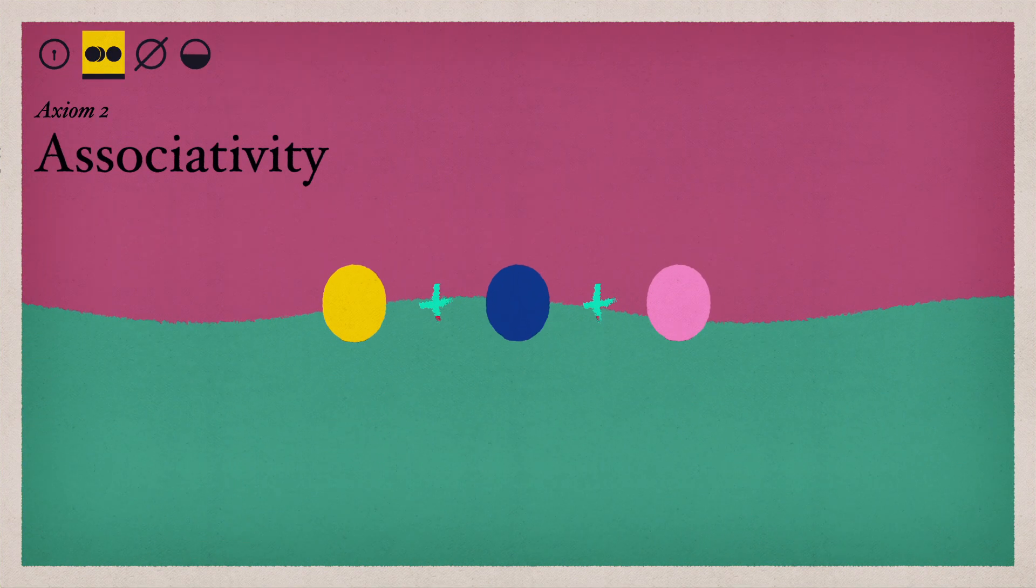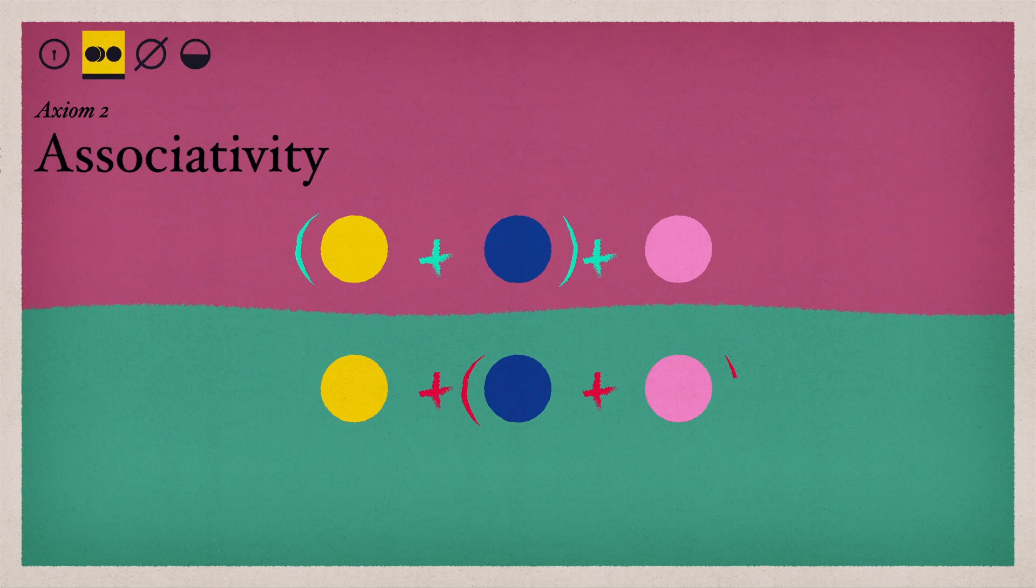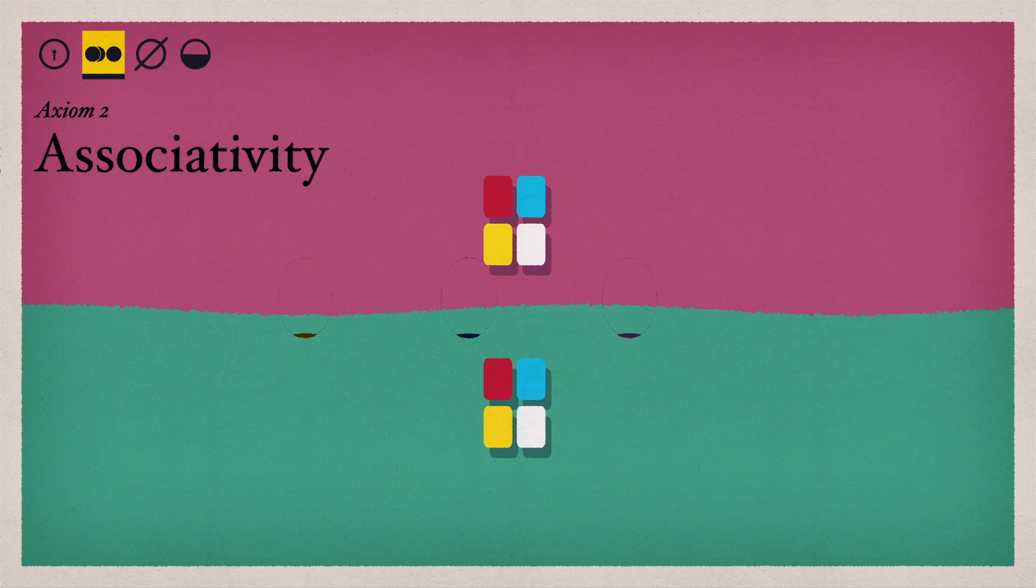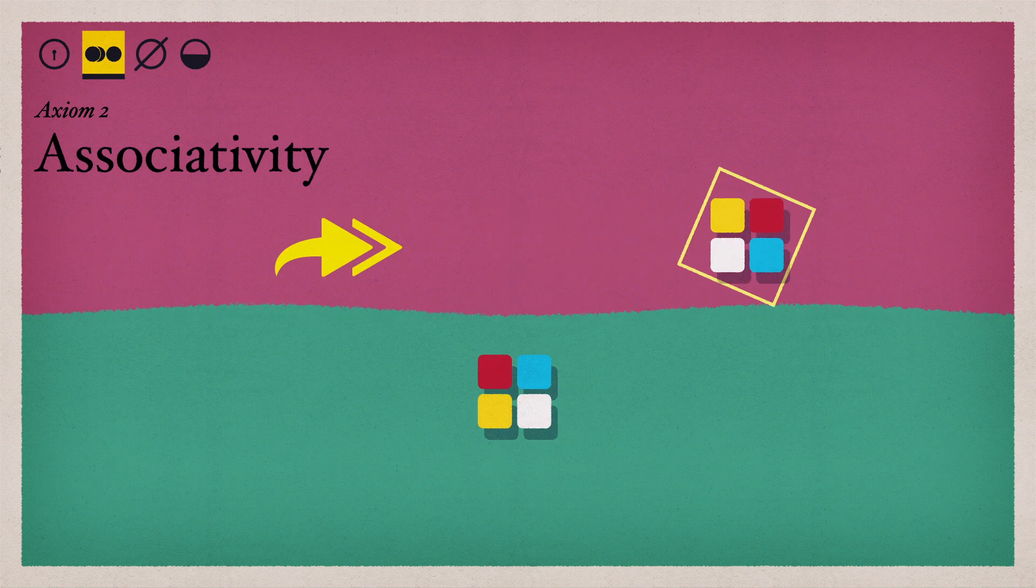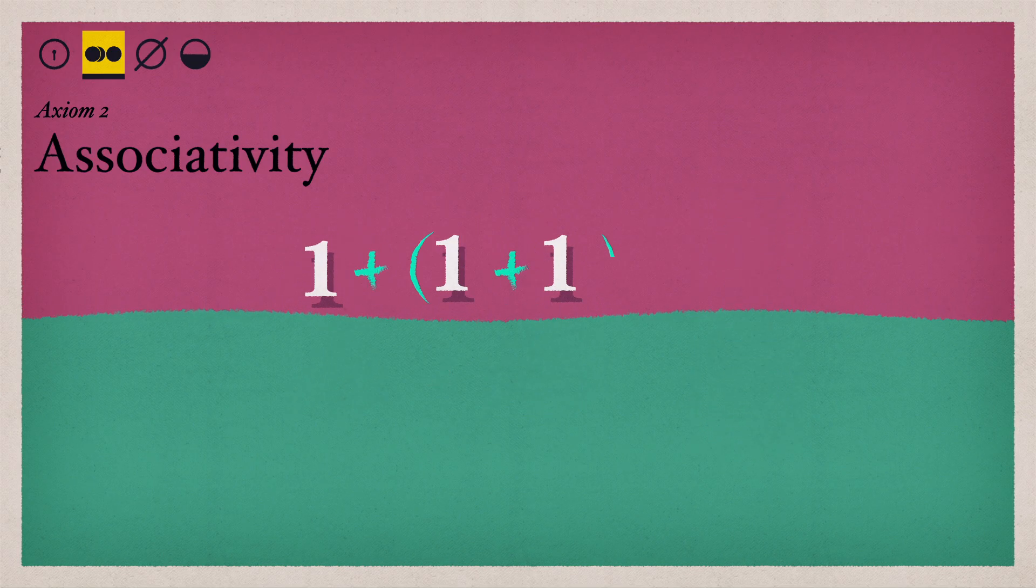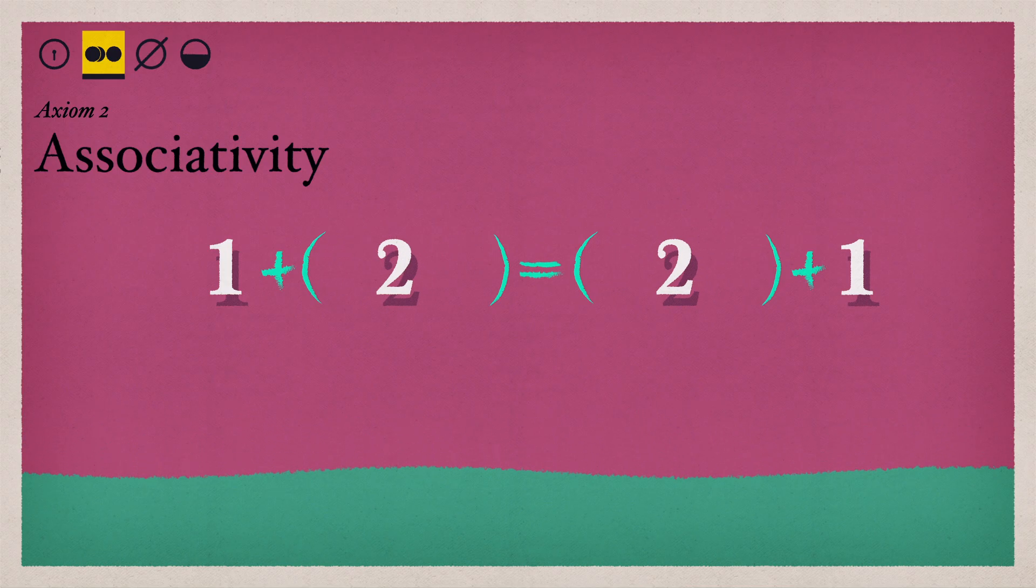Axiom 2: No matter where we put parentheses when we're doing a single group operation, we still get the same result. In other words, if we turn our square right two times, then right once, that's the same as once, then twice. Or for numbers, 1 plus 2 is the same as 2 plus 1.